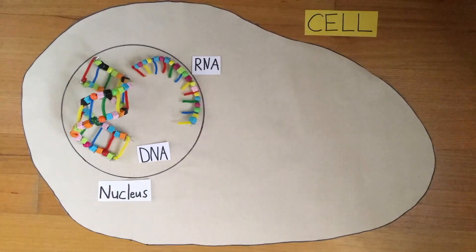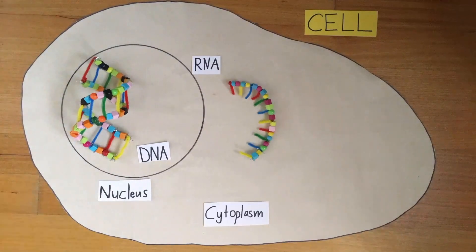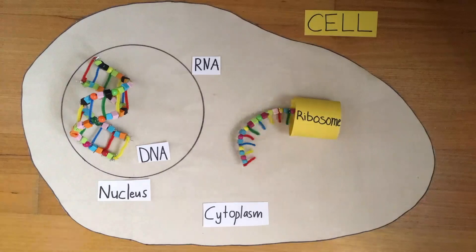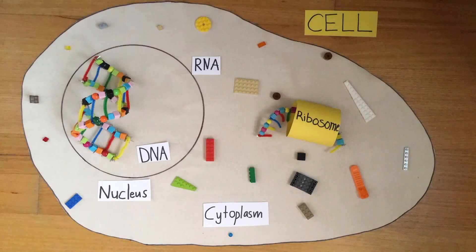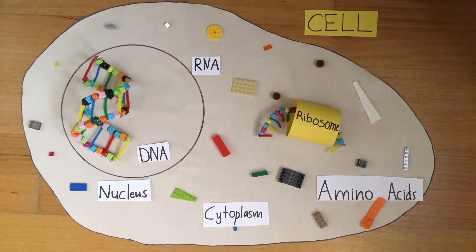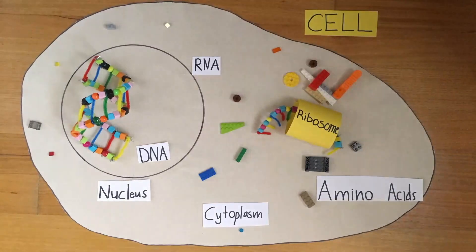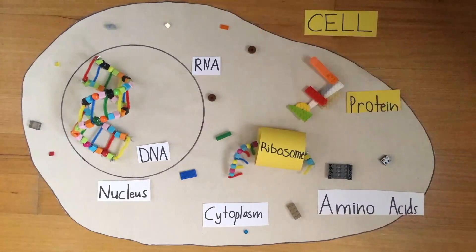Parts of the DNA strand are copied. These copies are called RNA. They travel into the cytoplasm where they feed into a particle called a ribosome. The RNA is like a set of Lego instructions telling the ribosome how to build a particular protein. The ribosome uses the amino acids in the cytoplasm to build a particular protein.